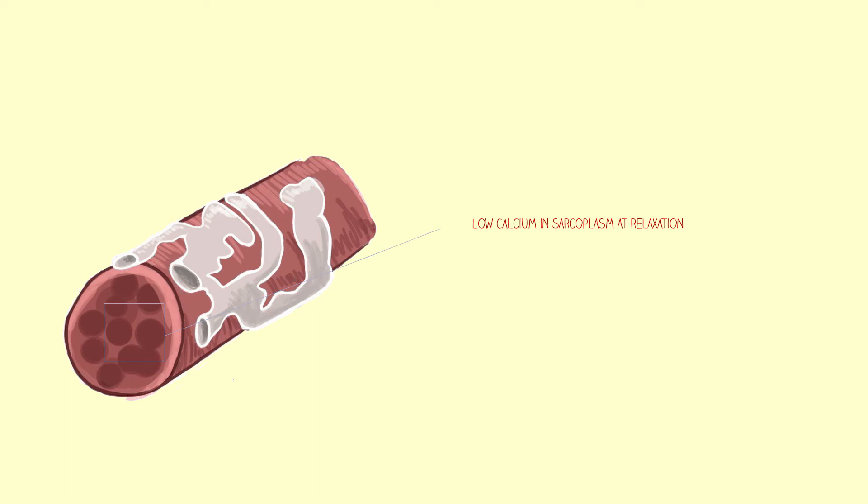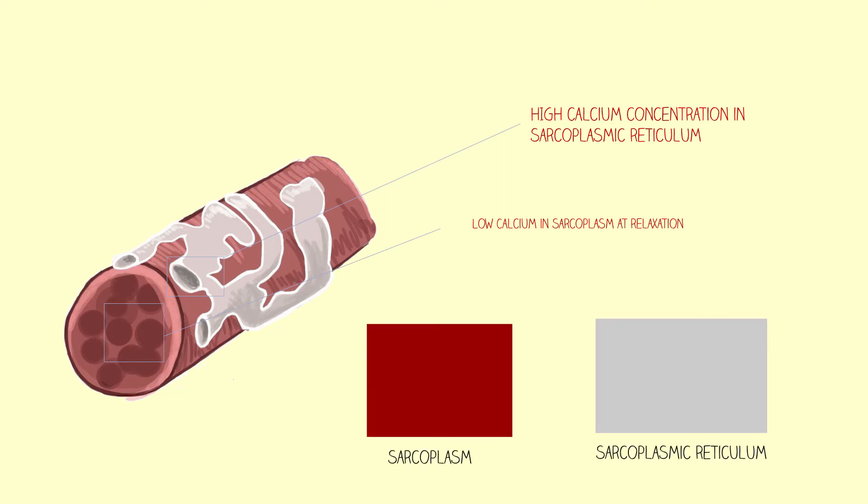At relaxation, muscle fibers have a very low concentration of calcium in the sarcoplasm, while the sarcoplasmic reticulum has an exceptionally high concentration of calcium. This forms an incredible 10,000-fold difference. In other words, for every one calcium ion in the sarcoplasm, there are 10,000 in the sarcoplasmic reticulum.